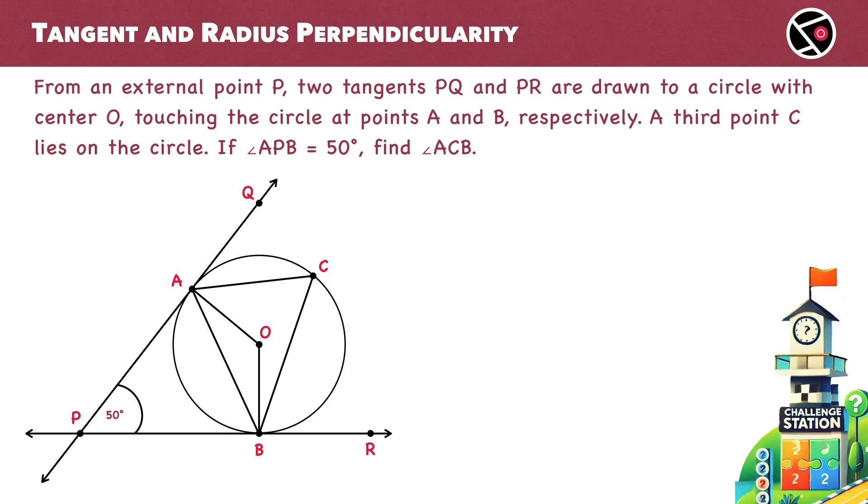Here's the problem. From an external point P, two tangents PQ and PR are drawn to a circle with center O, touching the circle at points A and B respectively. A third point C lies on the circle. If angle APB equals 50 degrees, find angle ACB. Please pause the video and give it a try.